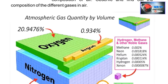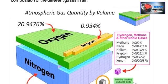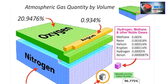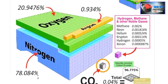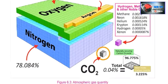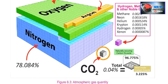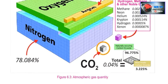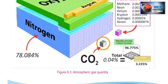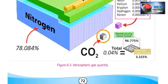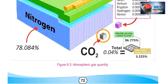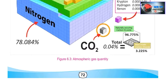Oxygen is 20.9476%. Argon is 0.93% and nitrogen is 78.08%. Other components include hydrogen, methane, and noble gases. Methane is 0.002%, Neon is 0.001182%, Helium is 0.000524%, Krypton is 0.000114%, Hydrogen is 0.00055%, and Xenon is 0.00000087%.